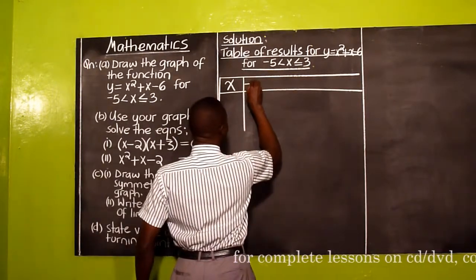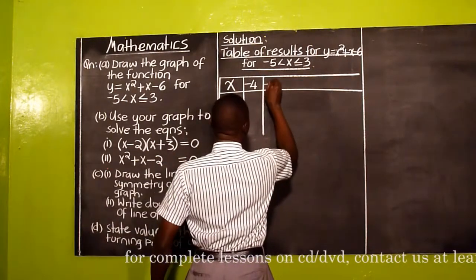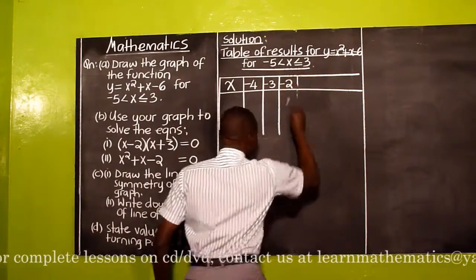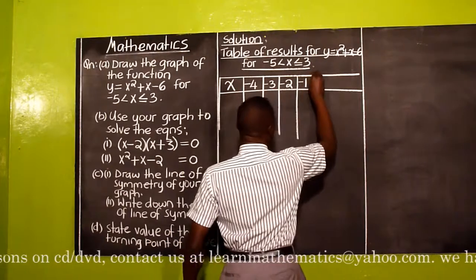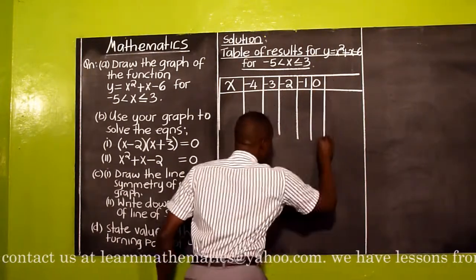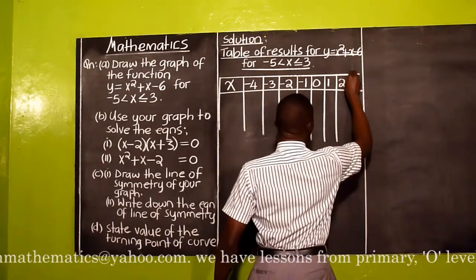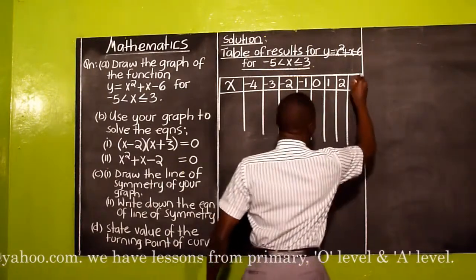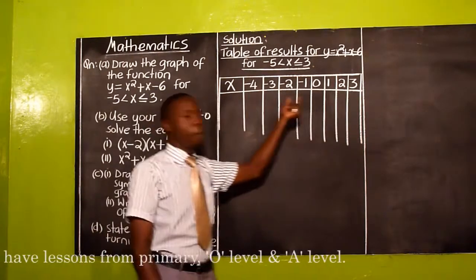So we have our -4 there, -3, -2, -1, 0, 1, 2, and then finally a 3. So we are moving from -4 to positive 3.